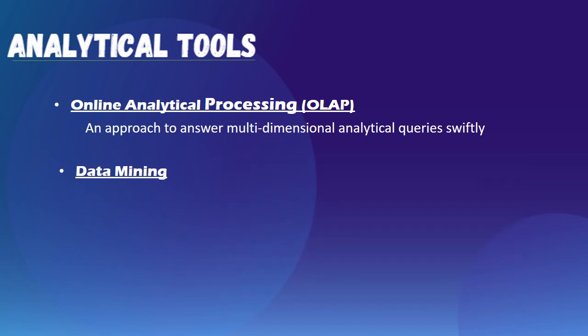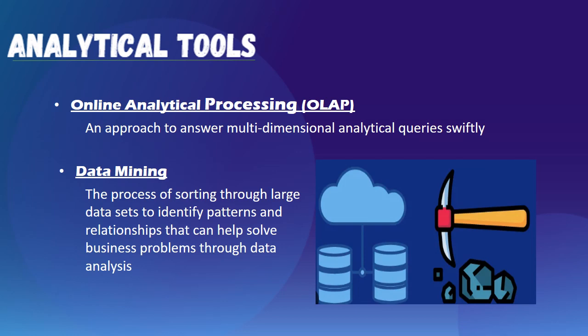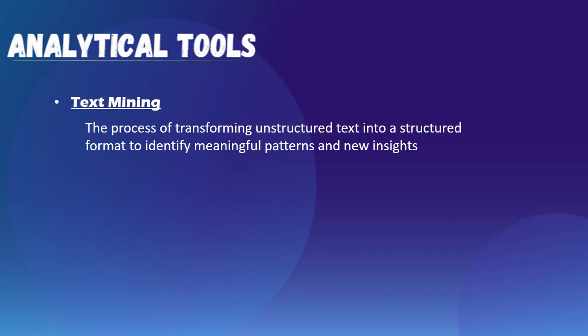On the other hand, data mining is the process of sorting through large datasets to identify patterns and relationships that can help solve problems through data analysis. Unlike OLAP, data mining is more focused on the discovery and identification of outliers or correlations that should not exist. For instance, a company may analyze its cash flow and find recurring transactions to an unknown account. If this is unexpected, the company may wish to investigate whether funds are being mismanaged.